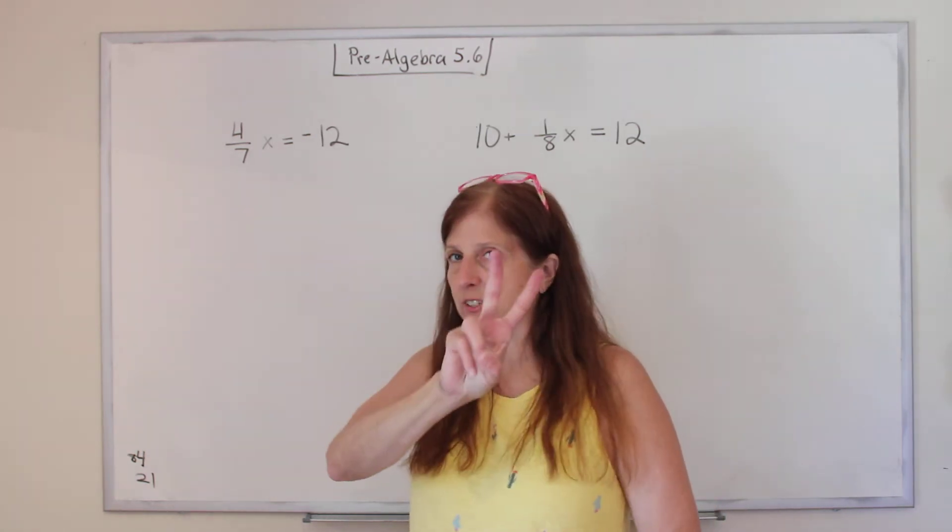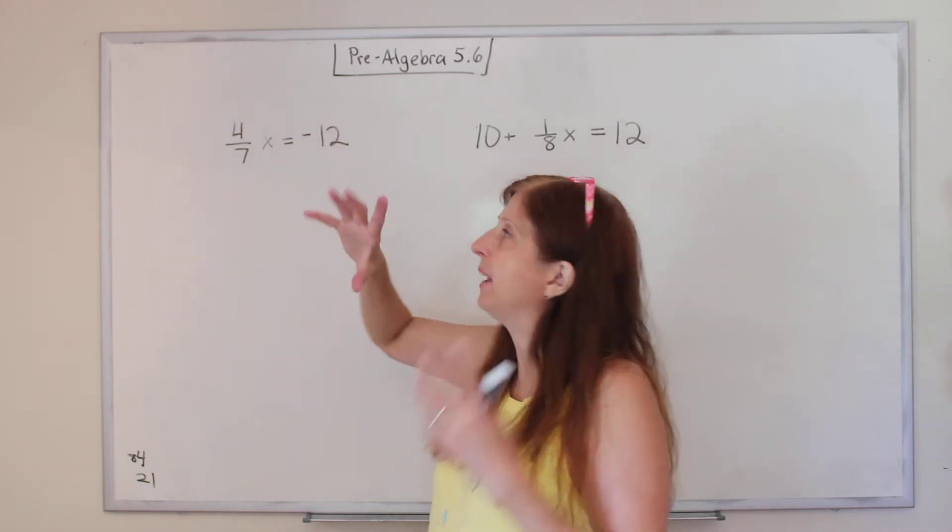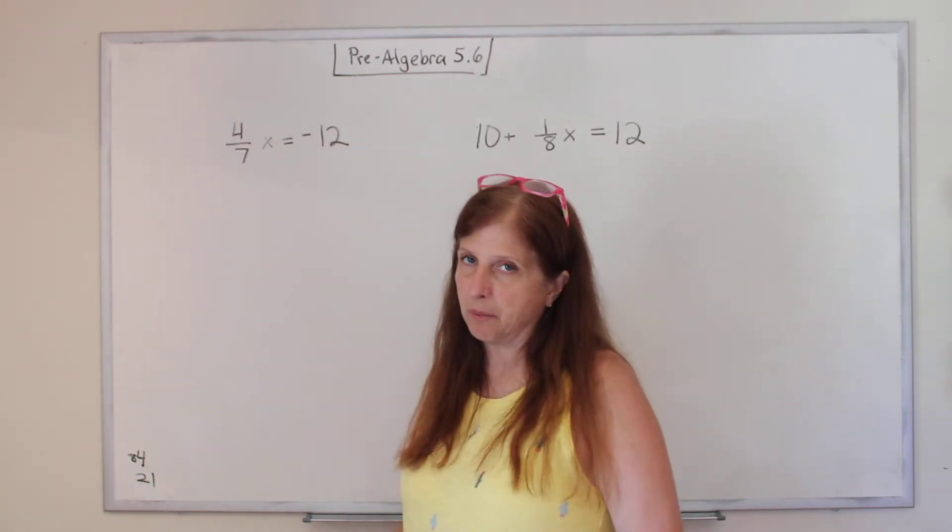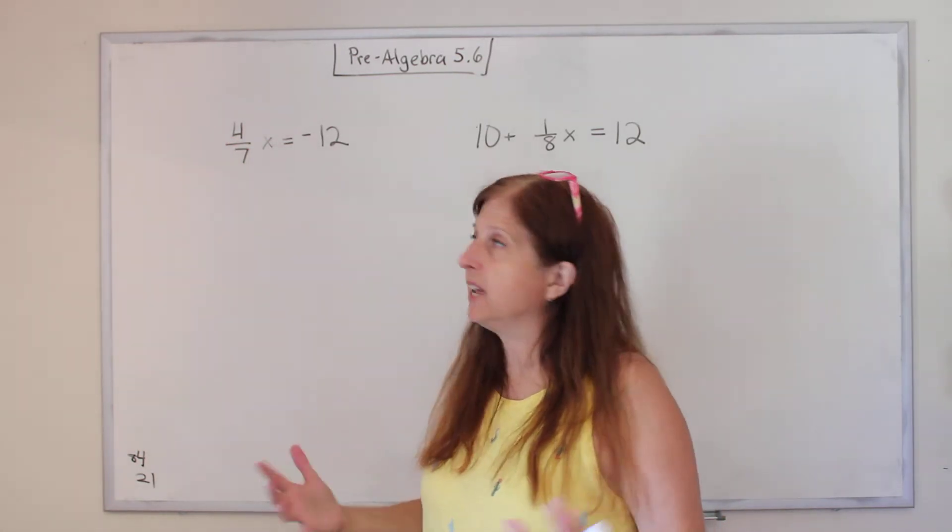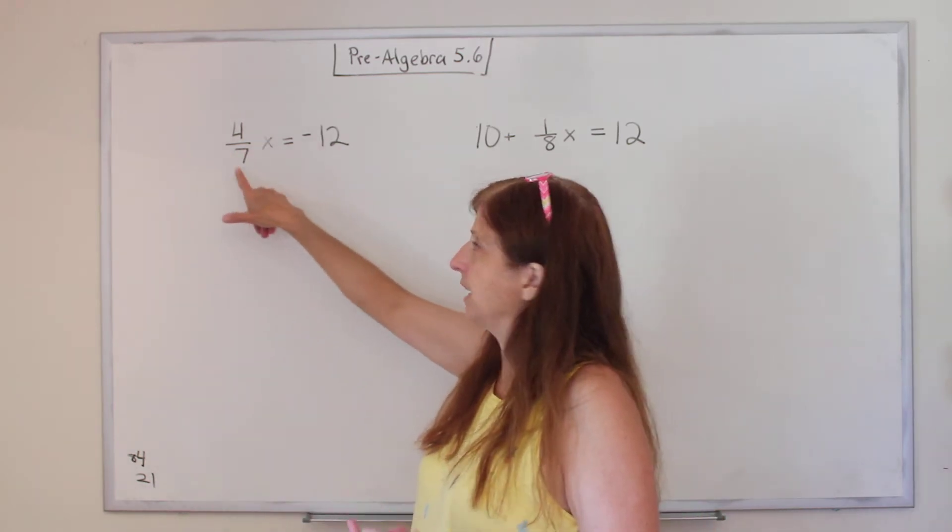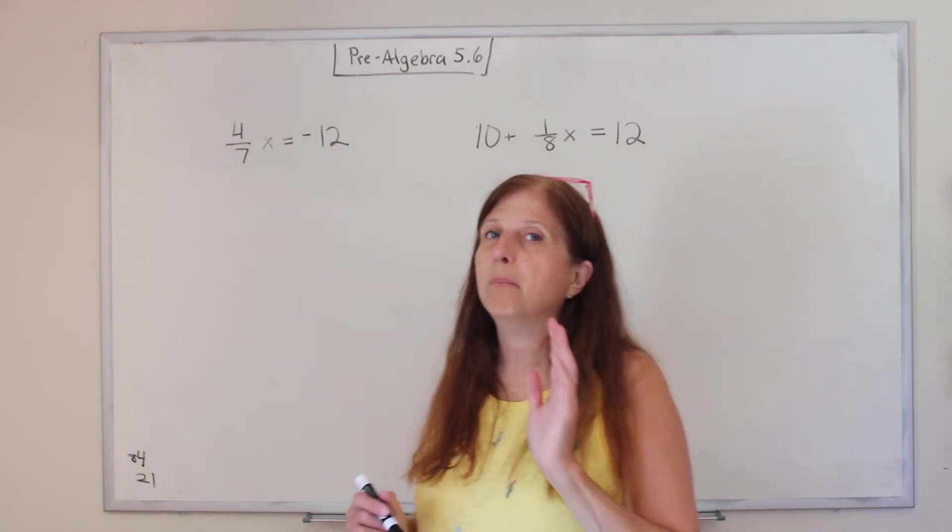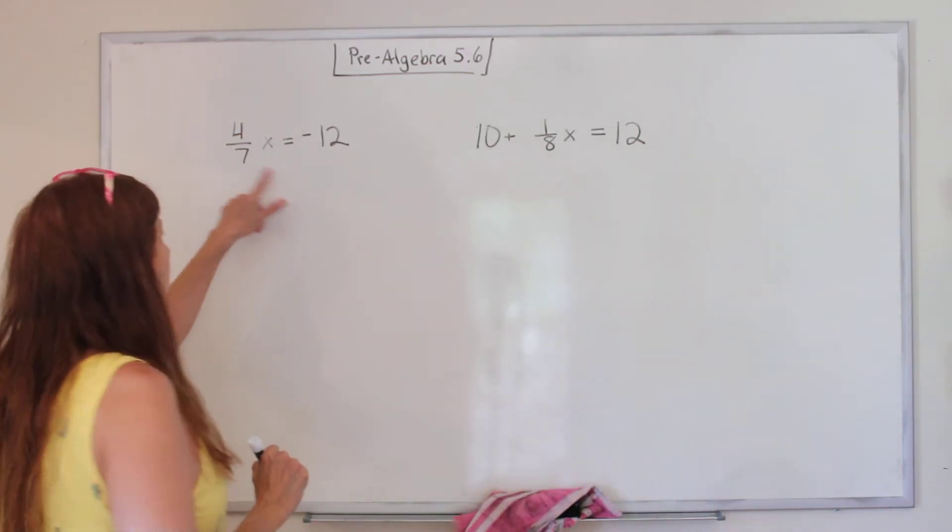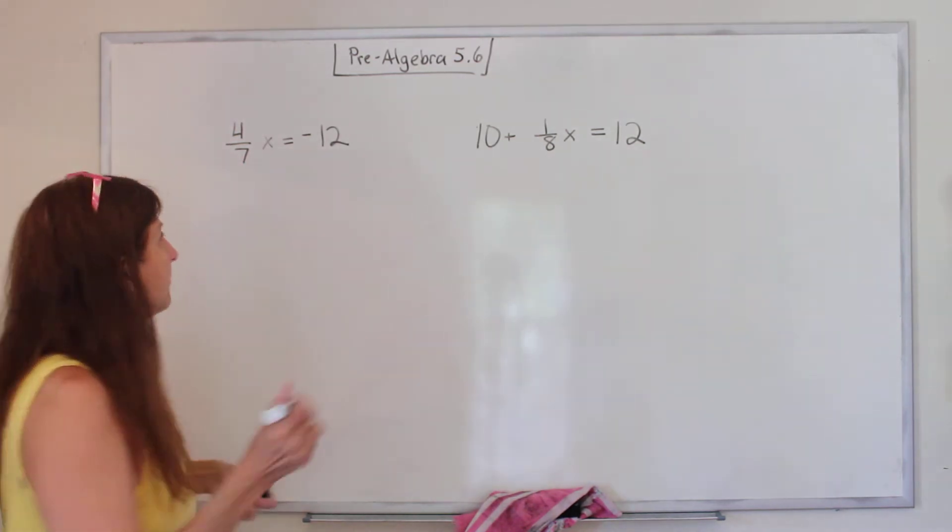It's to say really two things are happening to this x. You can think of it mathematically that this x is being divided by 7 and multiplied by 4. Or we could say, why is it ugly? Because there's a fraction. How do we get what's making it a fraction? Divided by 7. What's the opposite of divided by 7? Multiplied by 7. So what I want you to do, if you see something like this, is you're going to multiply by that 7.